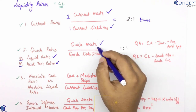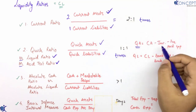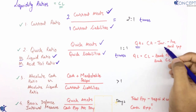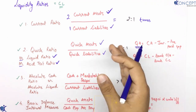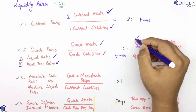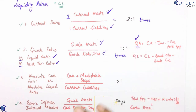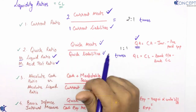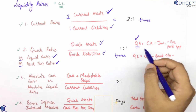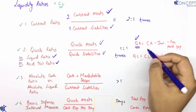Quick assets is nothing but current assets minus inventories (closing stock) minus prepaid expenses. Agar question mein directly figure diya ho toh use kar lo. Agar nahi diya, toh current assets mein se inventory aur prepaid expenses reduce kar do — this will give you quick assets.